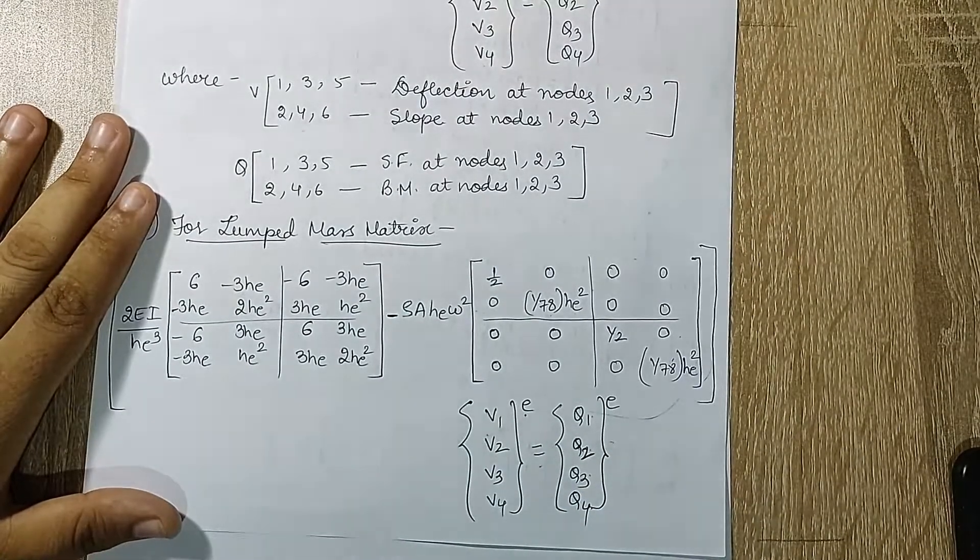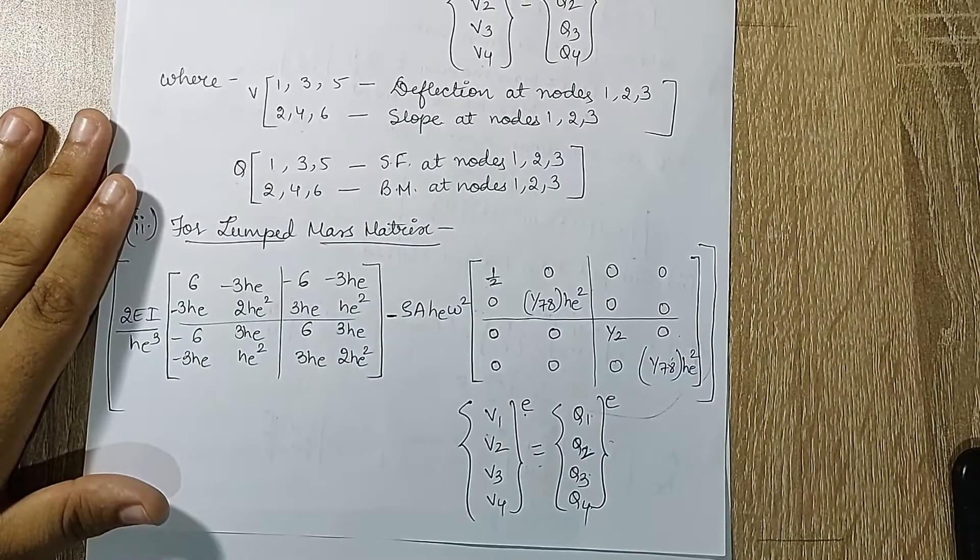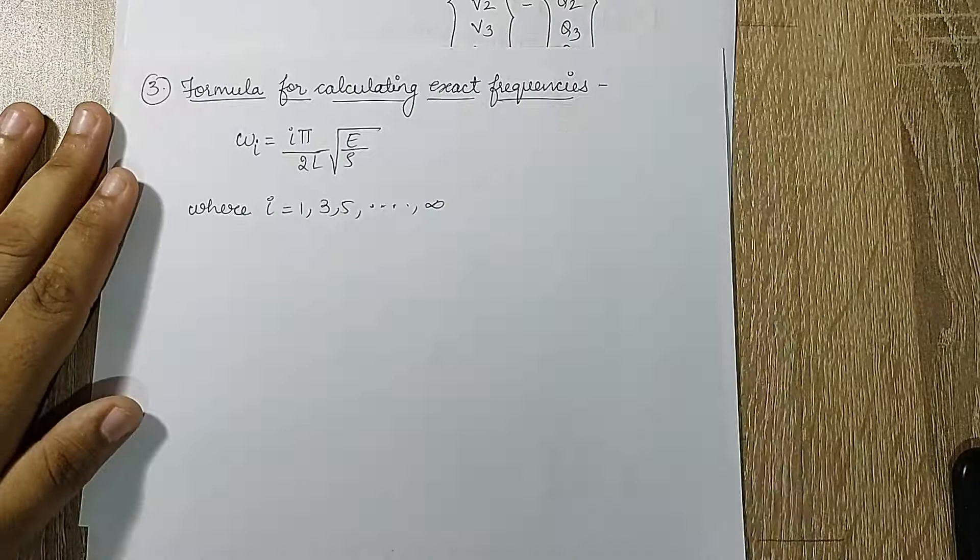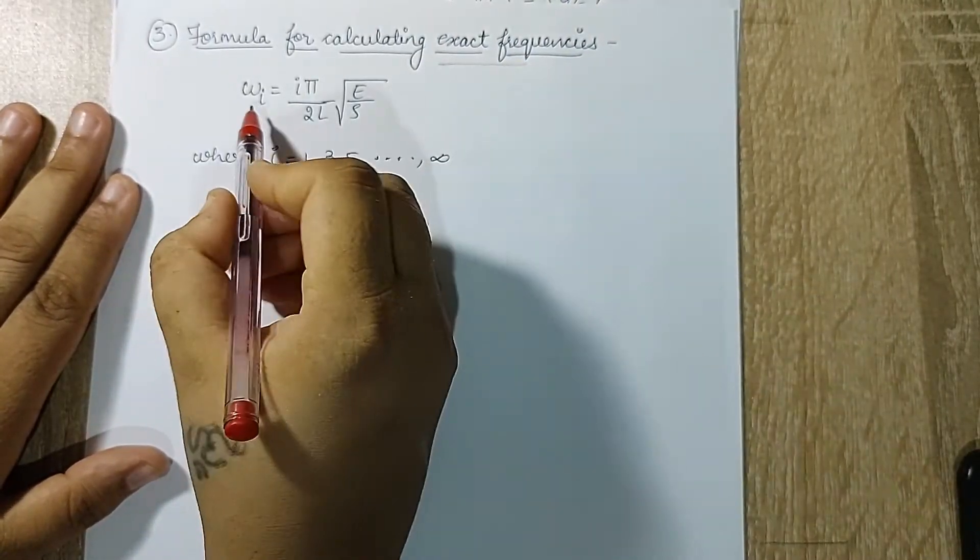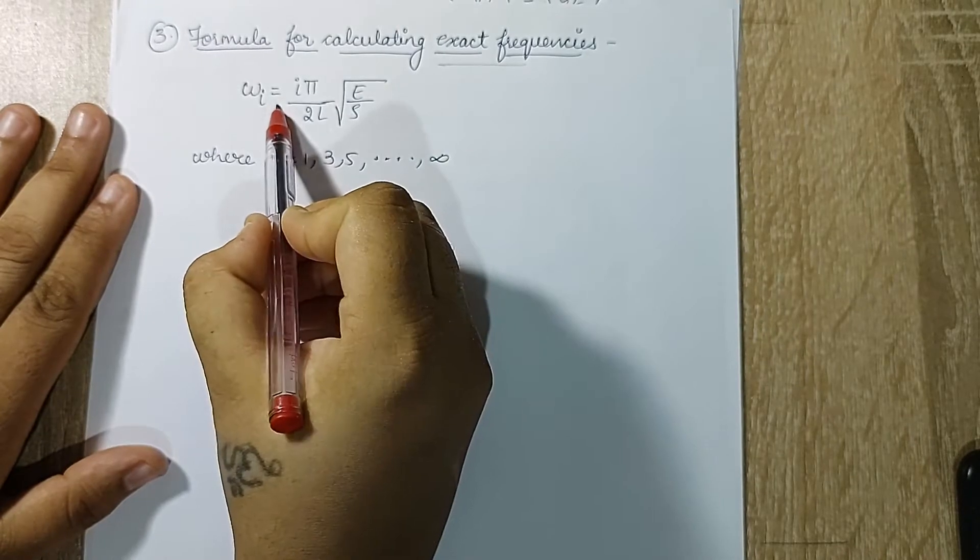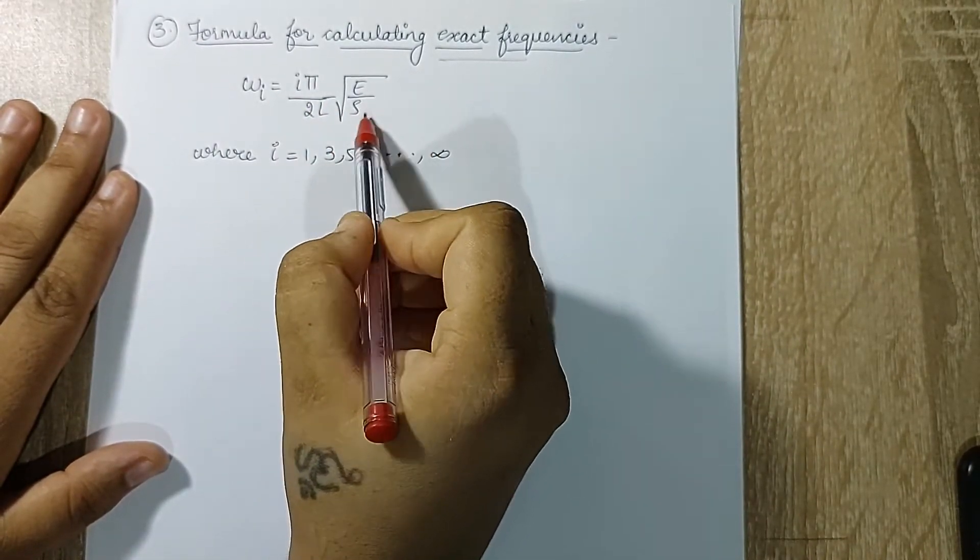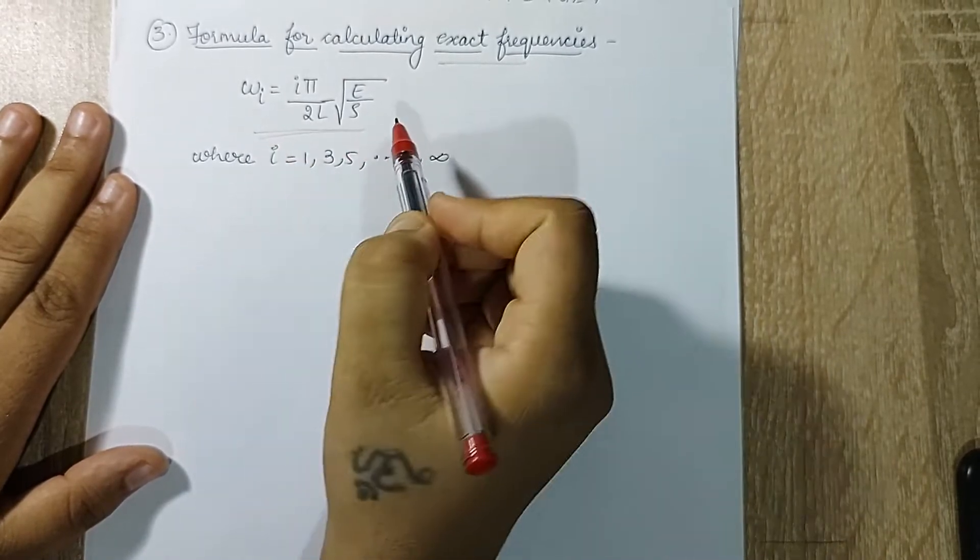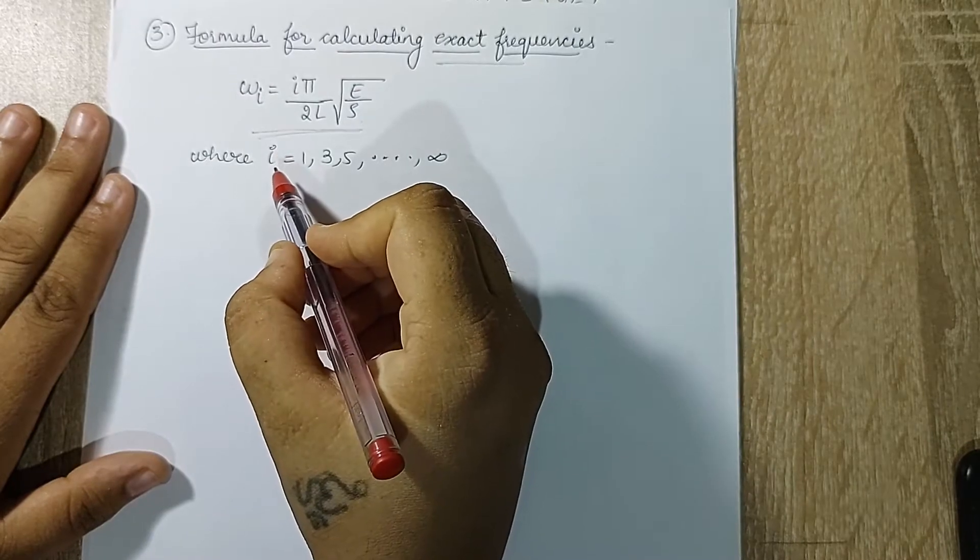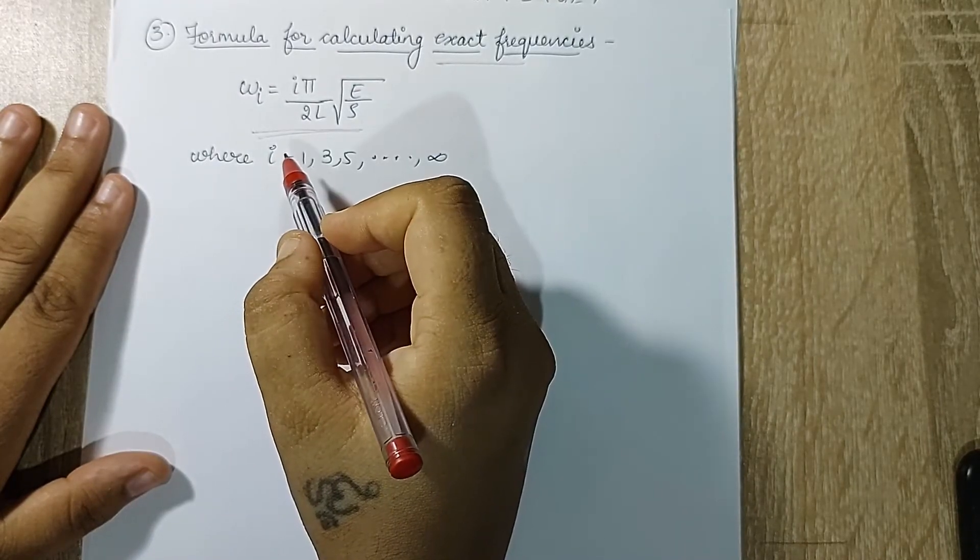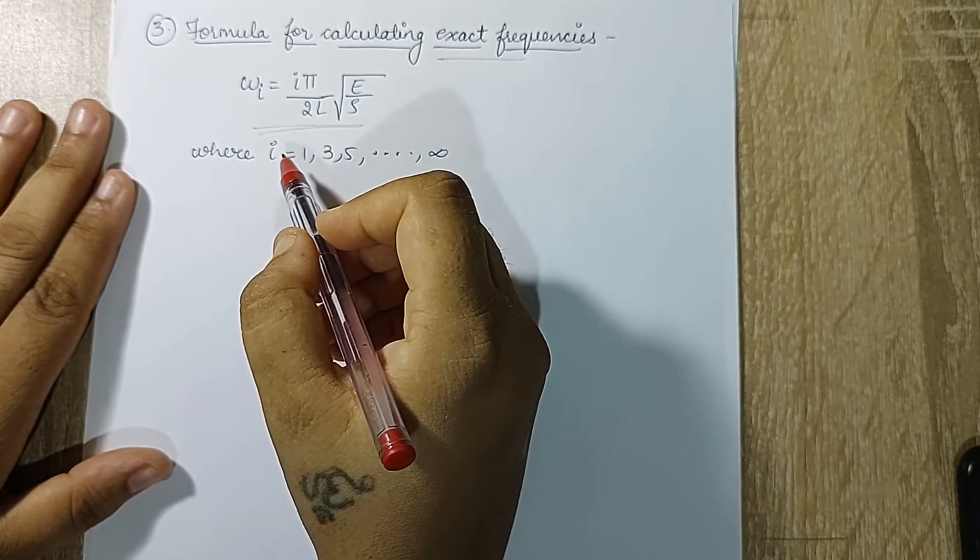They indicate the same thing which we just spoke about in consistent mass matrix. Now this is about solving by FEA method. There is also an exact method for calculating the frequencies. That is: omega_i equals i pi upon 2L into root of E upon rho. This formula derivation you must have already studied in your physics 12th standard.